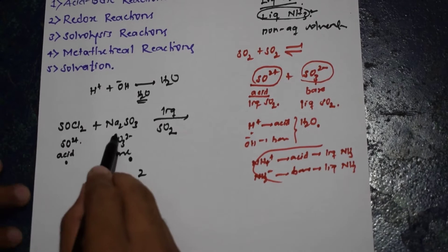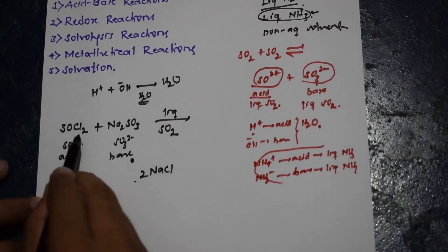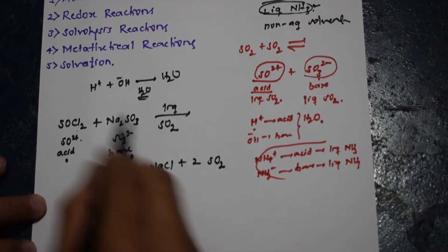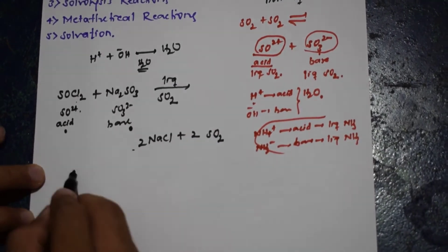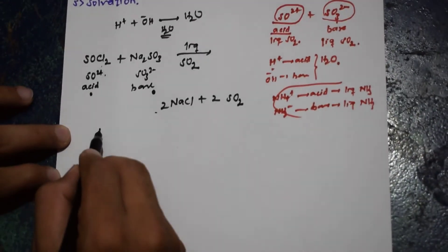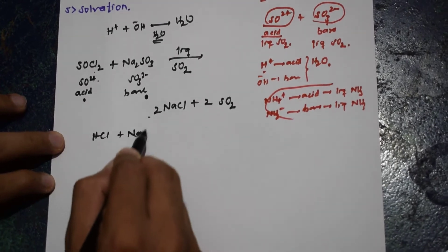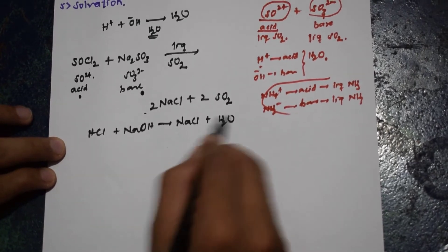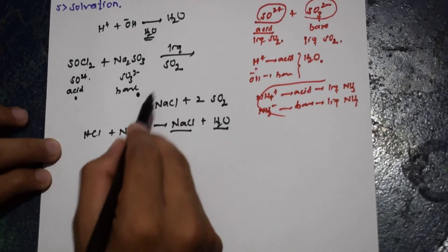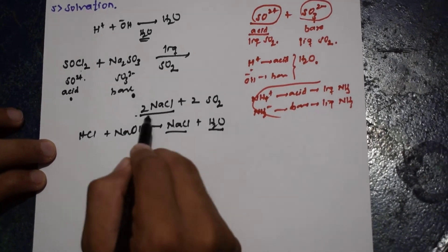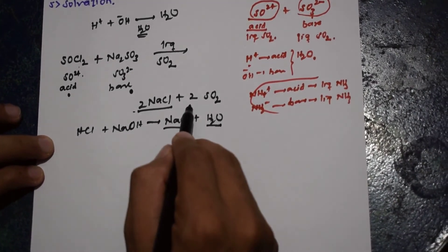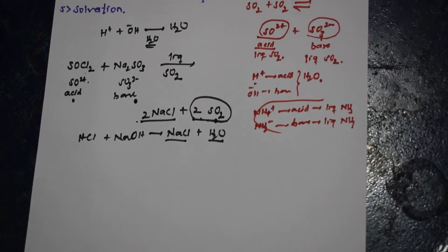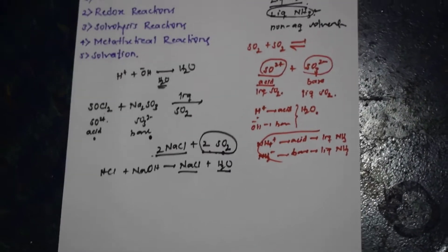Since it is an acid-base reaction, the product we get is 2NaCl plus 2SO₂ — sulfur dioxide. Comparing with water medium: HCl and NaOH react to give NaCl plus H₂O, that is salt and solvent. In the same way, in liquid sulfur dioxide, we get salt — 2 moles of NaCl — and 2 moles of sulfur dioxide, which is nothing but the solvent. That is the beauty of this acid-base reaction in liquid sulfur dioxide.